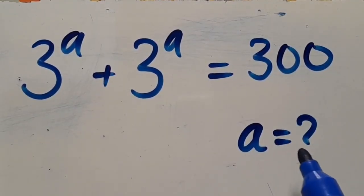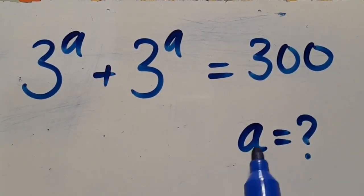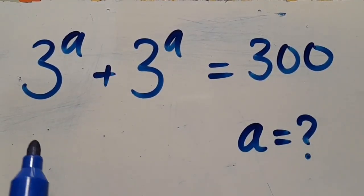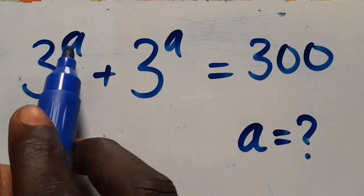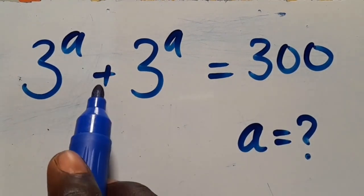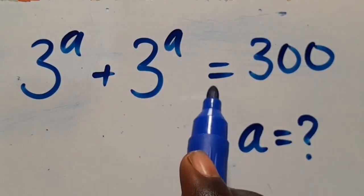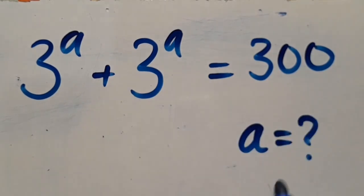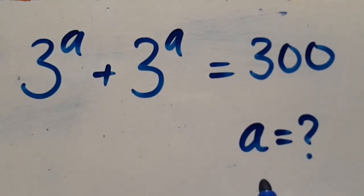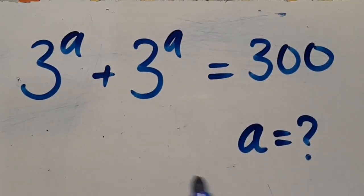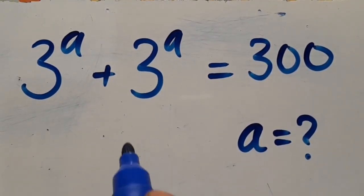Hi guys, today we want to find the value of a, given that 3 to the power of a plus 3 to the power of a equals 300. Let's have the solution.